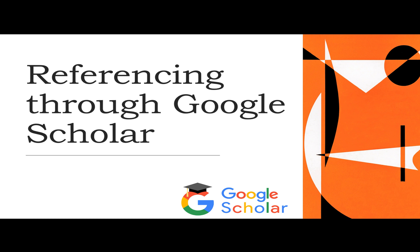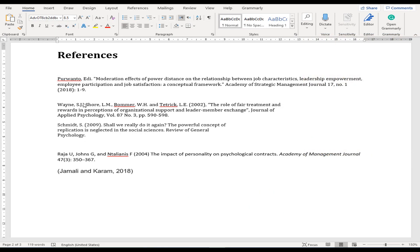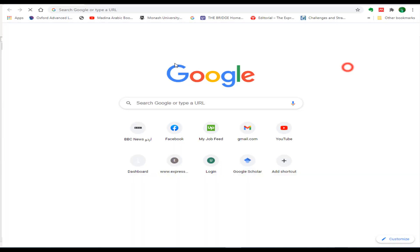So let's proceed and see how to do it with Google Scholar. Before proceeding further, if you haven't subscribed to my channel yet, please hit subscribe and remember to click the bell icon to receive notifications of every new video. So here we have five references and we want to change them to APA style.